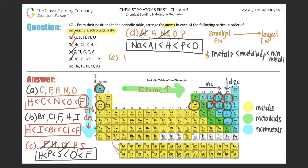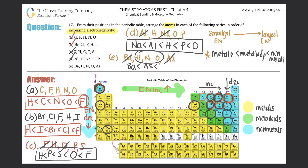For part (e), we have barium, hydrogen, nitrogen, oxygen, and arsenic. Barium is a metal and gets the lowest electronegativity. Arsenic is a metalloid, so it comes next. Then among the non-metals — hydrogen, nitrogen, oxygen — hydrogen has the least, then nitrogen, then oxygen going left to right. The ranking is: Ba, As, H, N, O.